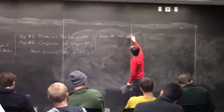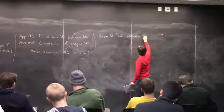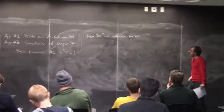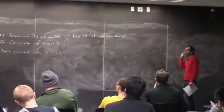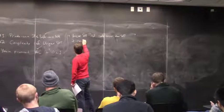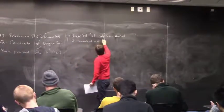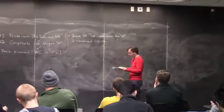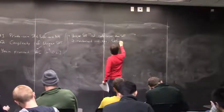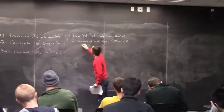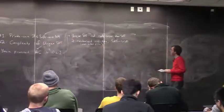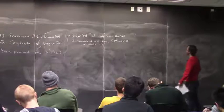This is the content of the Valiant-Vazirani theorem. The Valiant-Vazirani theorem says that unique SAT is not really easier than the general problem SAT. More precisely, if you're willing to allow randomness — which we usually are — then the ability to solve unique SAT gives you the ability to solve SAT in general. There exists a randomized reduction from SAT to unique SAT, and in fact it has one-sided error.